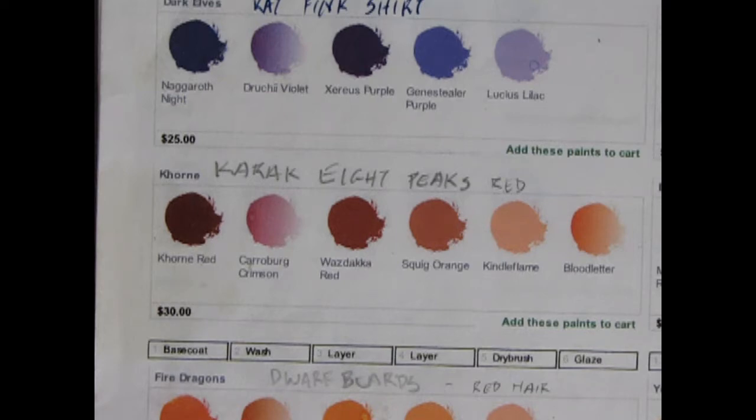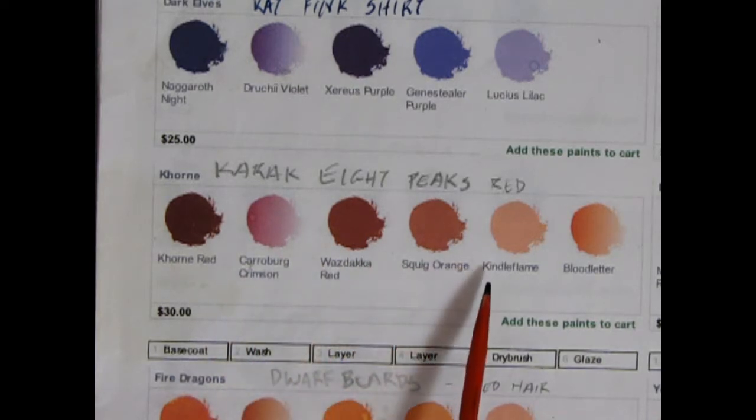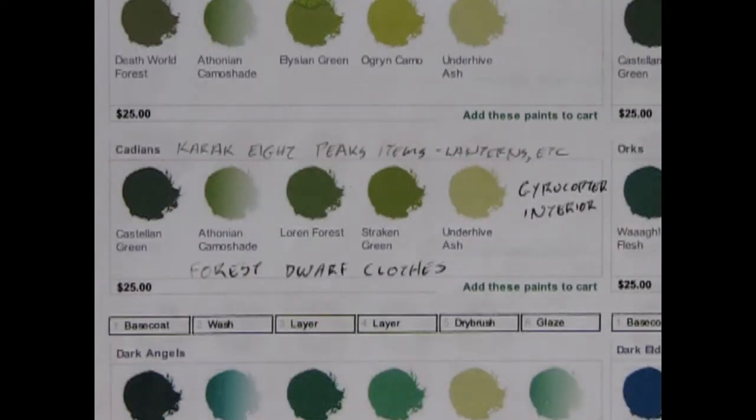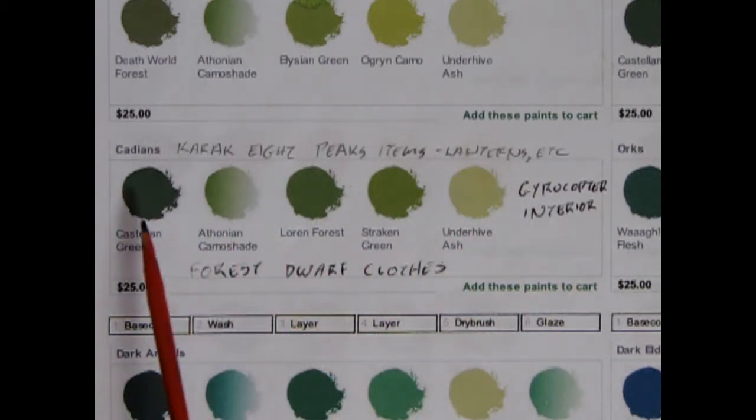It was around this time that Games Workshop released their Citadel paint lines, the current ones we use today. As you can see, there are six stages to painting these things. This is the one for Karak Eight Peaks Red, which is actually Korn Red, Kerrberg Crimson, Wazdaka Red, Squig Orange, Kindle Flame which is a dry brush color, and then Blood Letter which was a glaze. These color combinations were devised by Games Workshop for different figures, like Cadians for 40k.